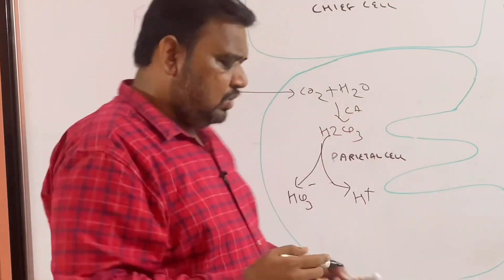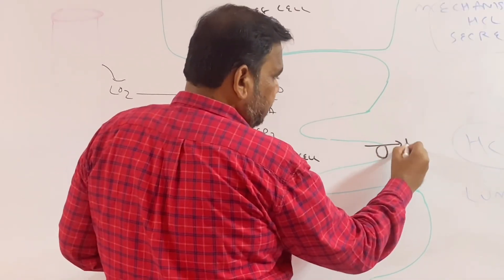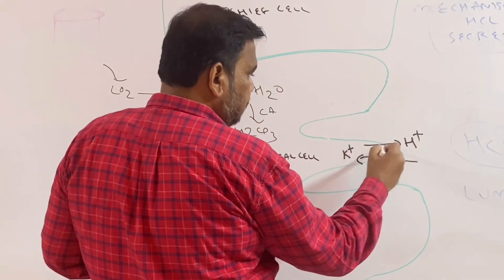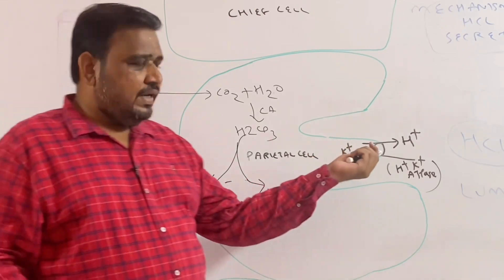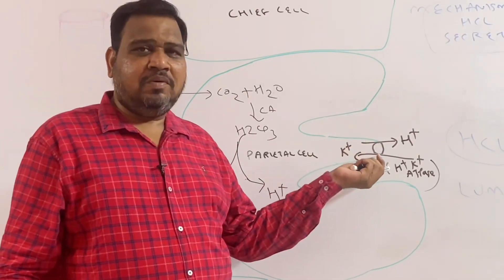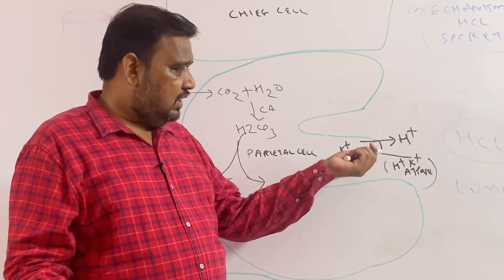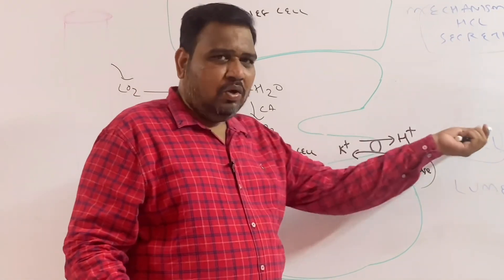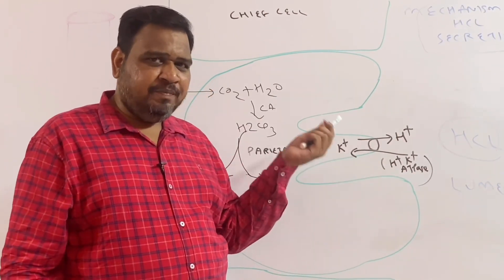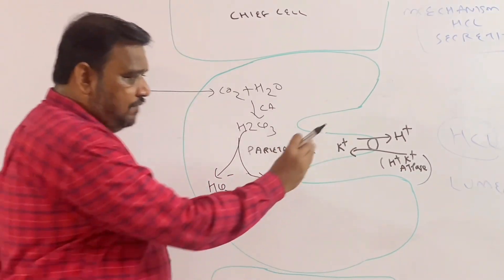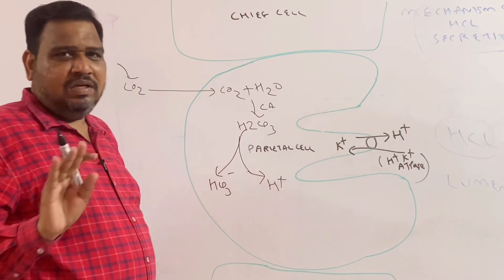H+ as such cannot enter into the gastric lumen — a pump is required. This pump sends H+ outside and K+ inside, and it is called H+/K+ ATPase, or the proton pump. You can pause the video and try to answer: what type of transport is this? The options are primary active transport, secondary active transport, simple diffusion, or facilitated diffusion. H+ is going outside and K+ is coming inside with the help of H+/K+ ATPase — yes, it is a type of primary active transport. Only if this pump is present will H+ go outside.